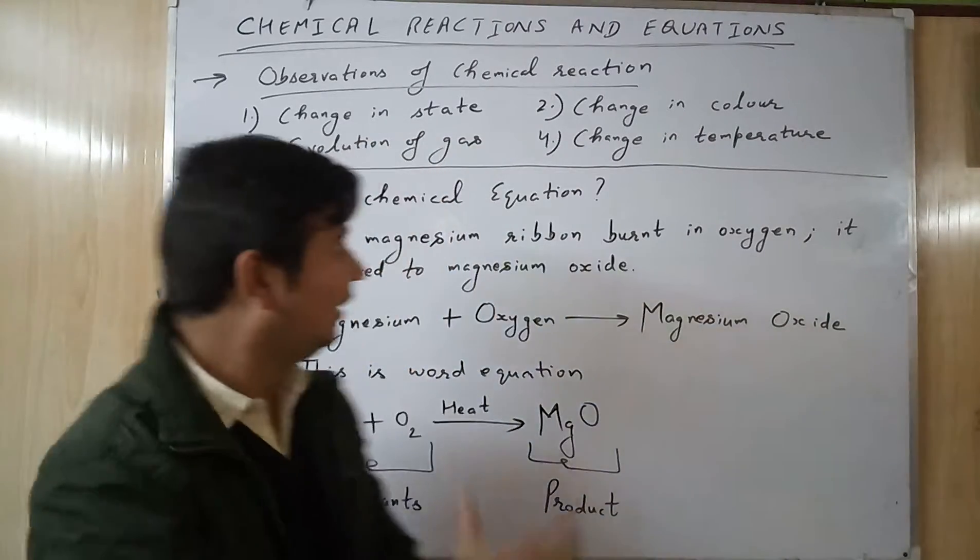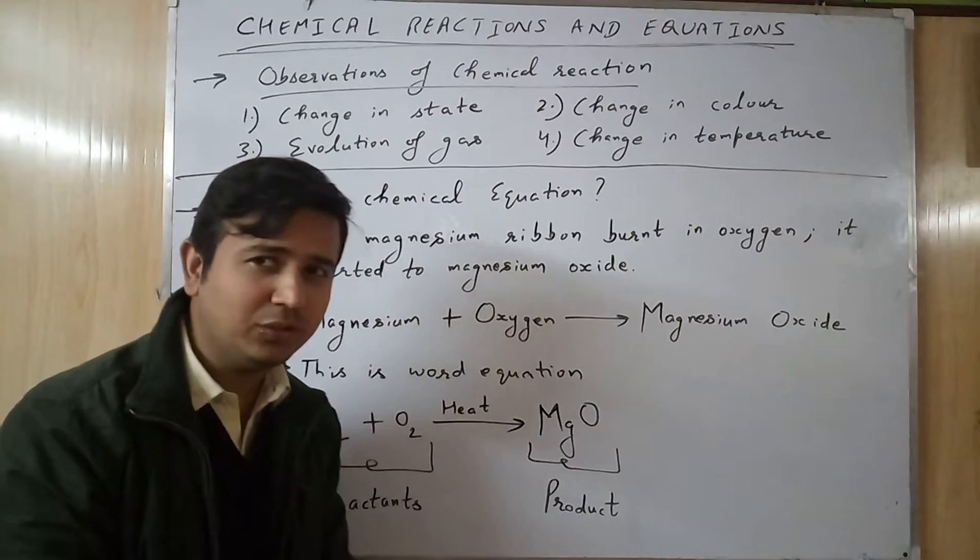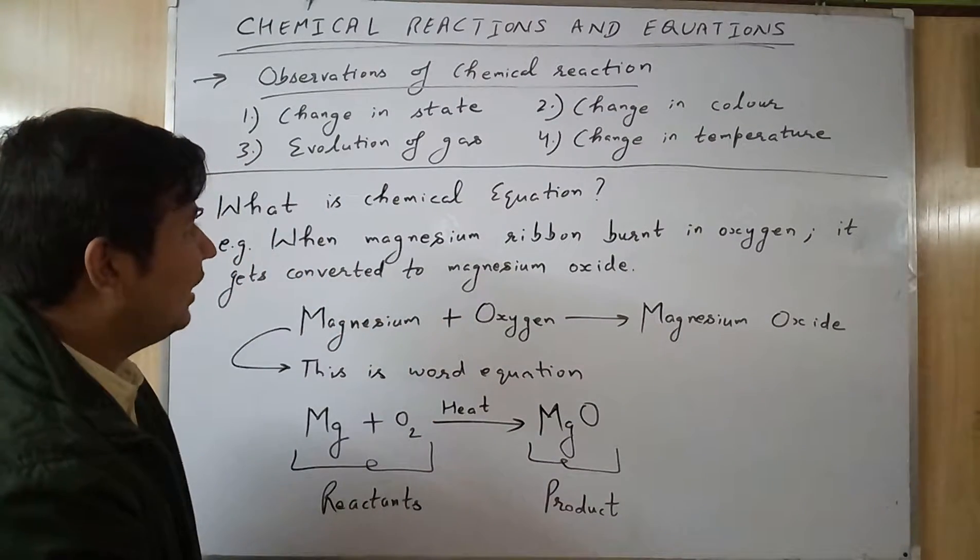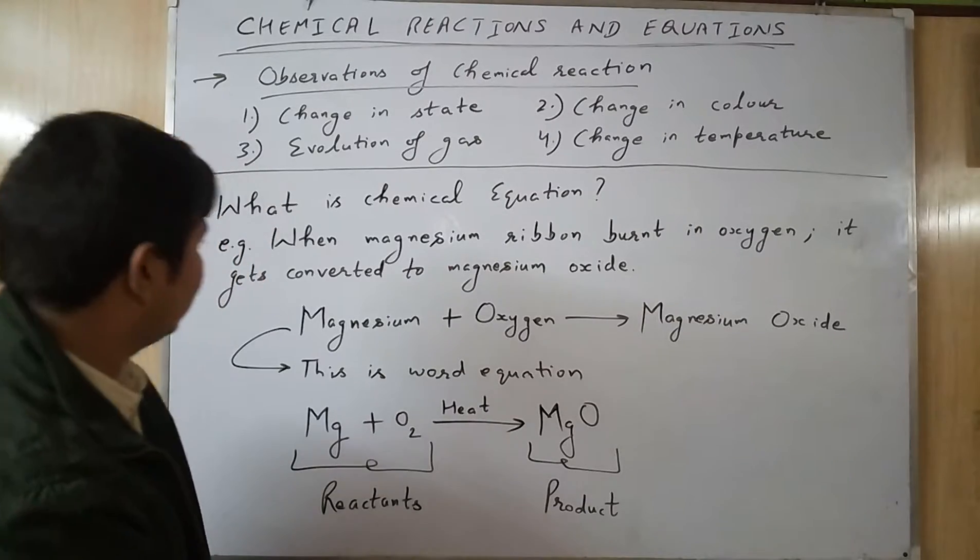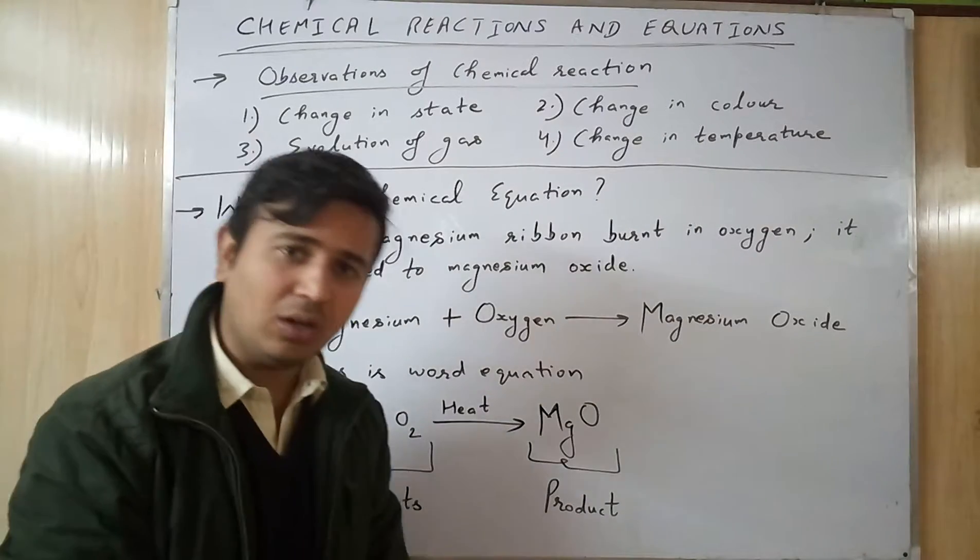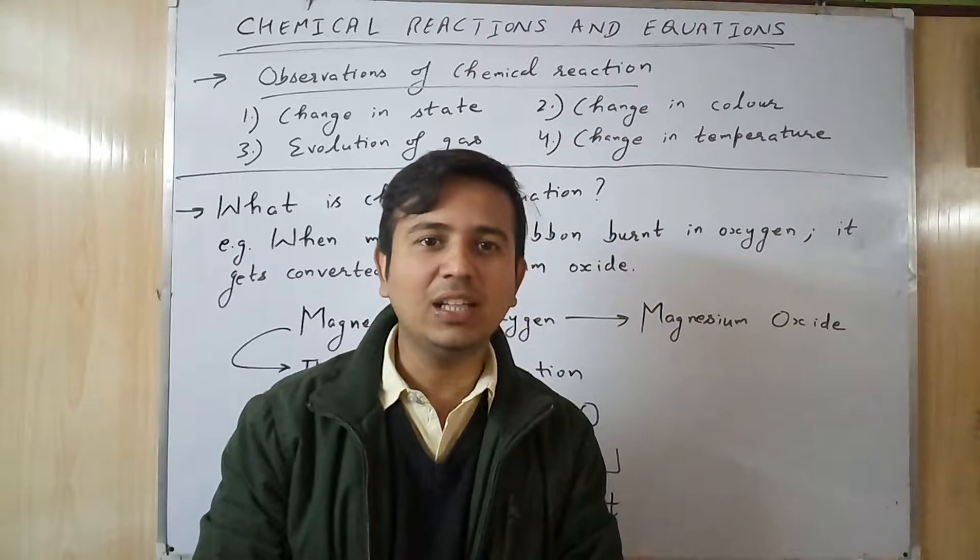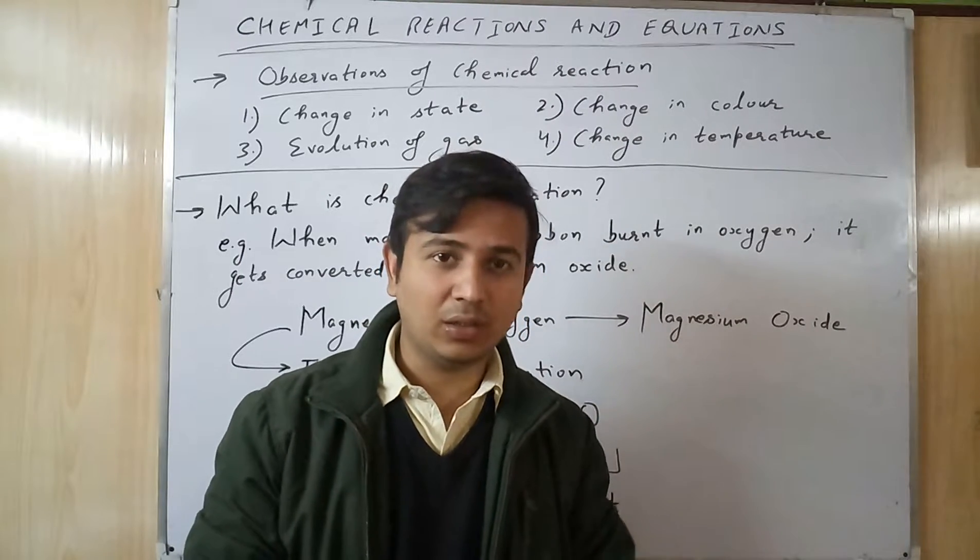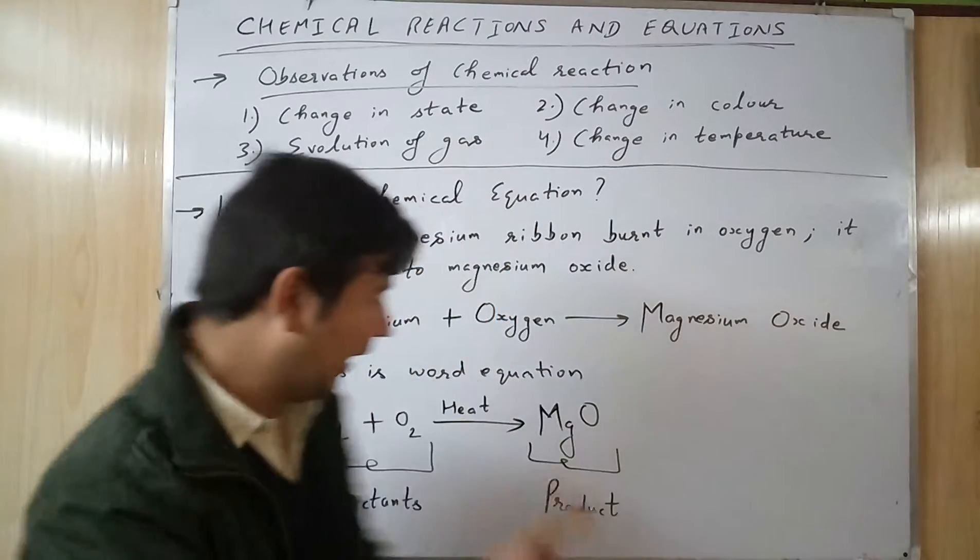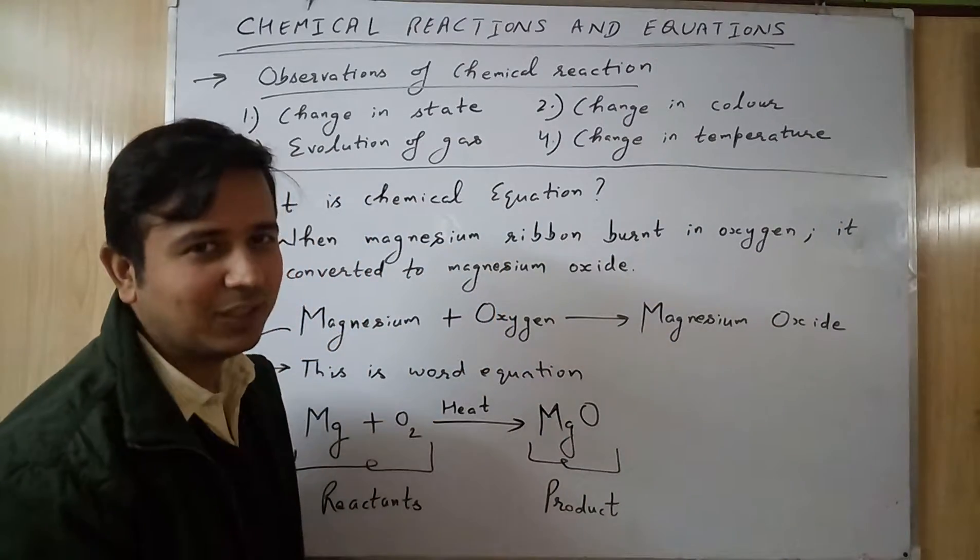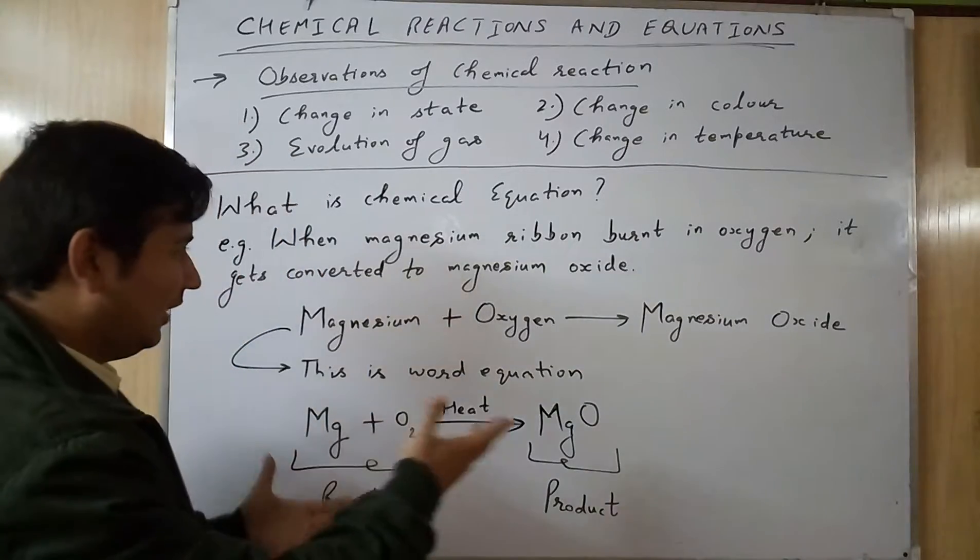What is a chemical equation? For example, I will clarify with an example. When magnesium ribbon burns in oxygen, it is converted into magnesium oxide. Now this is a lengthy statement, so we can write a word equation like this: magnesium plus oxygen gives you magnesium oxide.